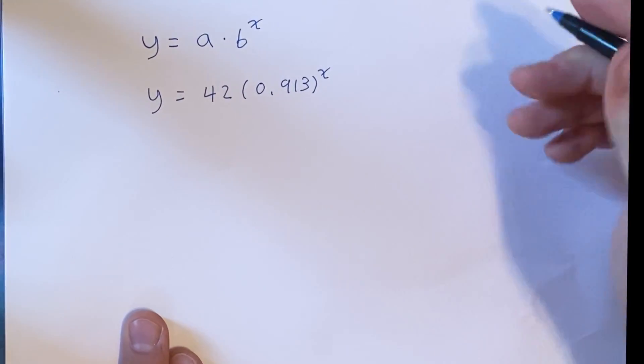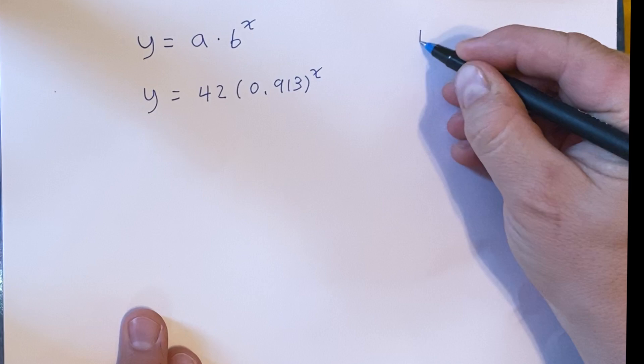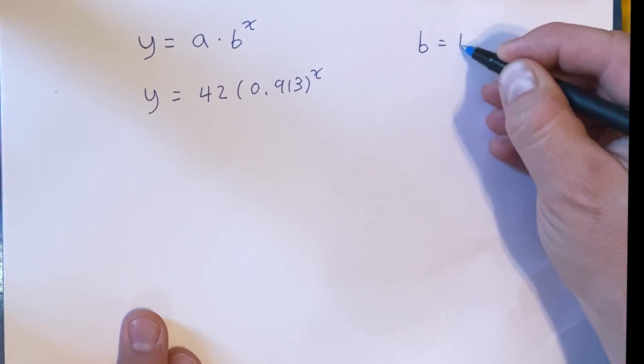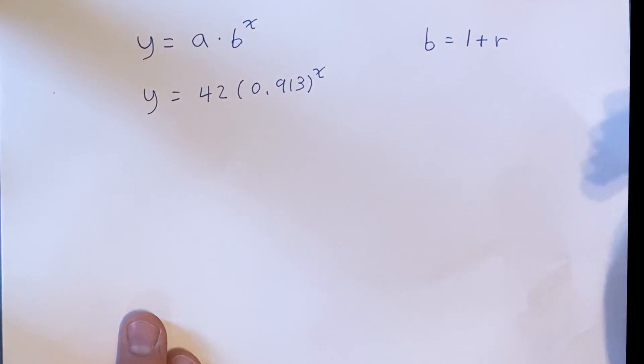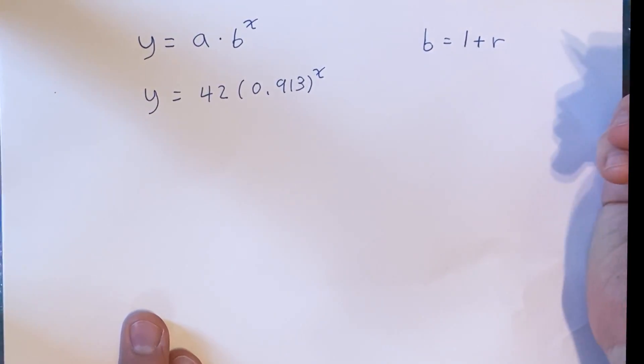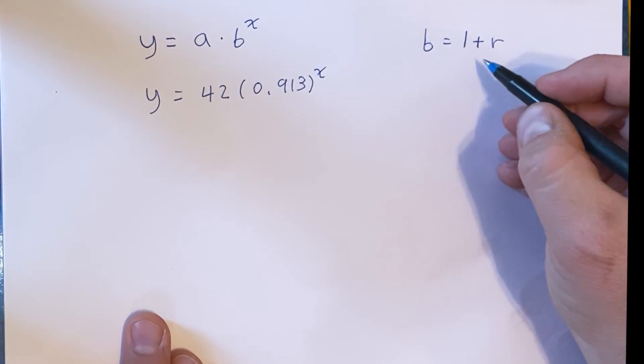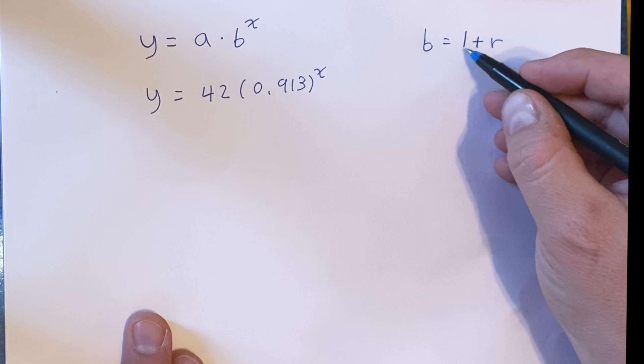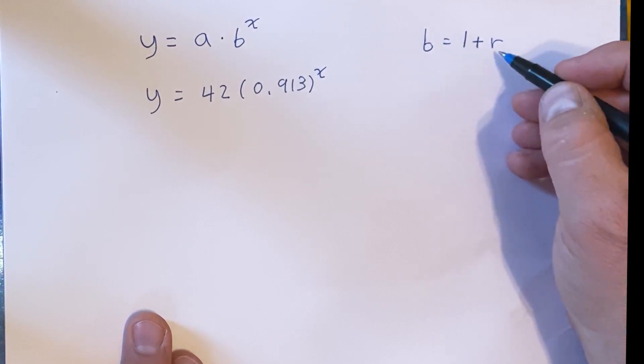So we know what our b is. We also know that b equals 1 plus r. Here, r is our rate of change and b is the multiplier. We have 1 here because it's 100% plus the rate of change, and these are all as a decimal.